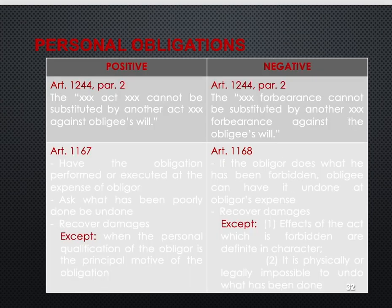In personal obligations, there are positive and negative obligations. Under Article 1244, in positive obligations, the act cannot be substituted by another act against the obligee's will. For negative obligations, the forbearance cannot be substituted by another forbearance against the obligee's will. In Article 1167, in positive obligations, you have the obligation performed or executed at the expense of the obligor, and what has been poorly done shall be undone. You may also recover damages, except when the personal qualification of the obligor is the principal motive of the obligation.